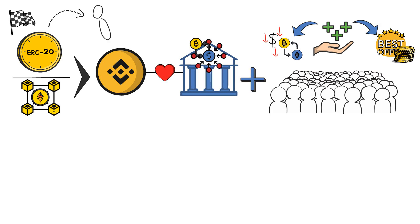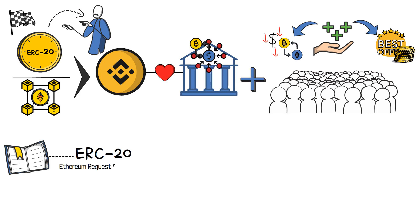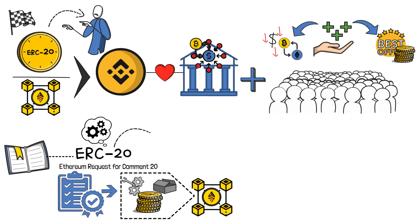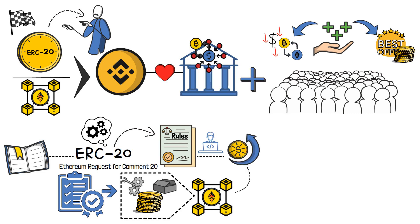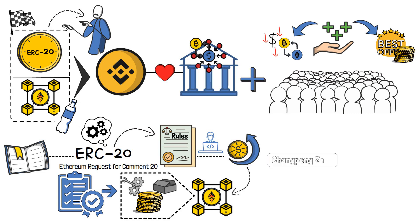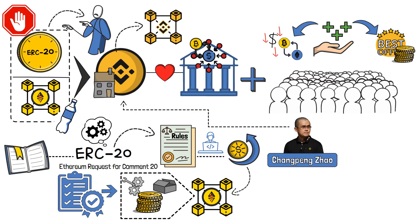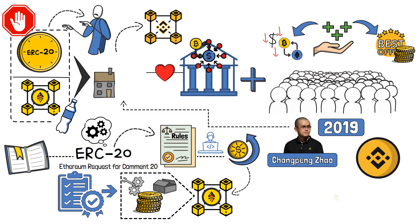If the term ERC20 token threw you off track, here's a quick explanation. ERC20 stands for Ethereum Request for Common 20, which is a widely adopted standard for creating and issuing tokens on the Ethereum blockchain. It's the set of rules and guidelines that token developers follow when launching their own digital assets on the Ethereum network. But this was a limitation — CZ wanted BNB to be the native currency of Binance's own blockchain, not just something adhering to Ethereum standards. So in 2019, BNB moved away from the ERC20 standard and was transferred onto what became known as the BNB chain.